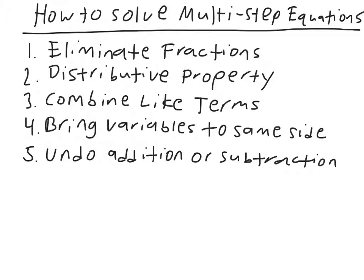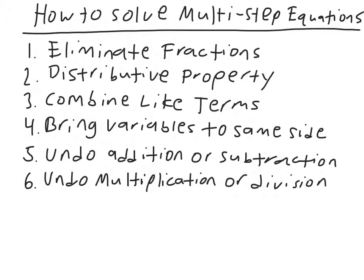Remember, the first step in a two-step equation is to undo the addition or subtraction, and we do that by doing the opposite — if you're adding, you subtract; if you're subtracting, you add. The final step is to undo multiplication or division, again by doing the opposite: if you're multiplying, you divide; if you're dividing, you multiply. Write these steps down — they're good to have handy when solving equations, and just go down through them.